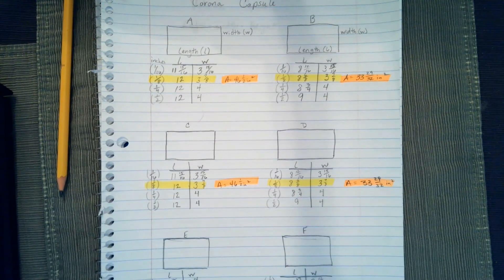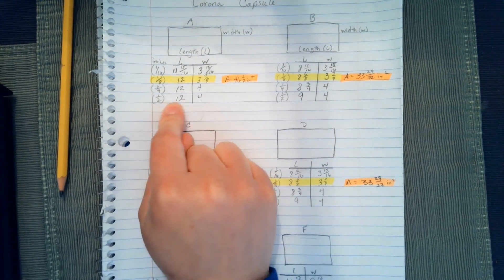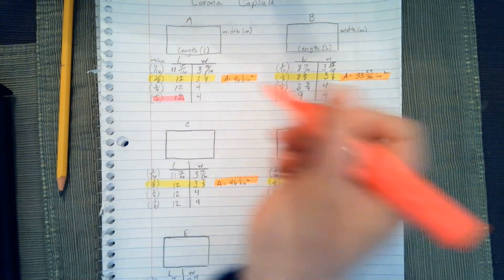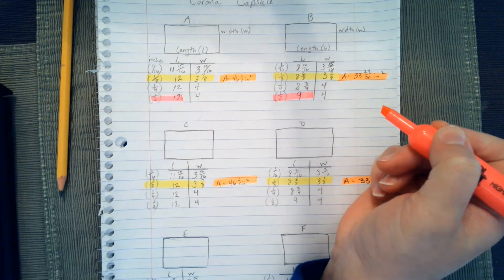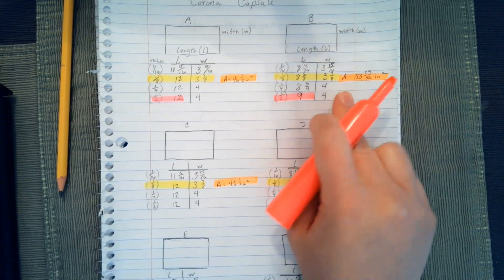Okay, so I'm going to find the volume of my corona capsule. So like I just told you, you're going to be using your one half inch measurements. You're going to be using the length of your A side, the length of your B side, and you're going to be using your A and B width, and they should be the same.